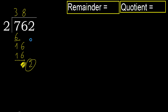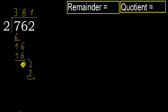Next, eliminate 0. Bring down 2. 2 multiplied by 1 is 2, which is not greater. Subtract. There is no next number, therefore finish it.